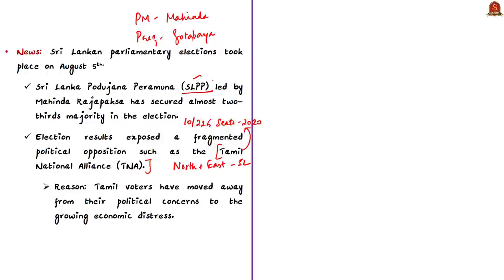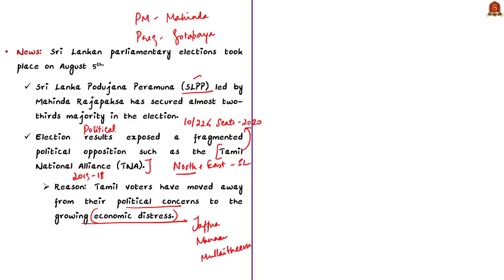This happened because Tamil voters moved away from their political concerns due to growing economic distress. The majority of the Tamil population in Sri Lanka live in the Northern provinces — Jaffna, Mullaitivu, Mannar, etc. The Northern Provincial Council was under Tamil National Alliance leaders from 2013 till 2018. Though they were in power, they focused mainly on political devolution and failed to revive the economy of the Tamil population post civil war. At the national level, the Tamil National Alliance was aligned to the Maitripala Sirisena–Ranil Wickremesinghe government, but was badly let down by this alliance, leading to a bad image among Tamil people and a huge defeat in the recent elections.